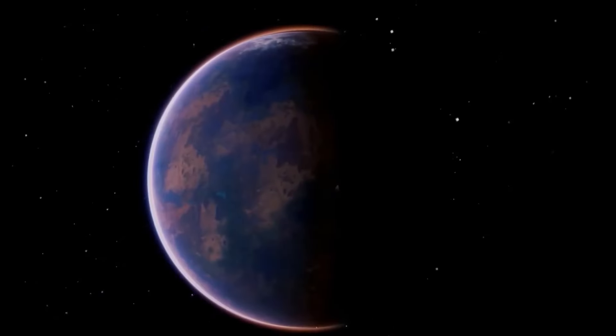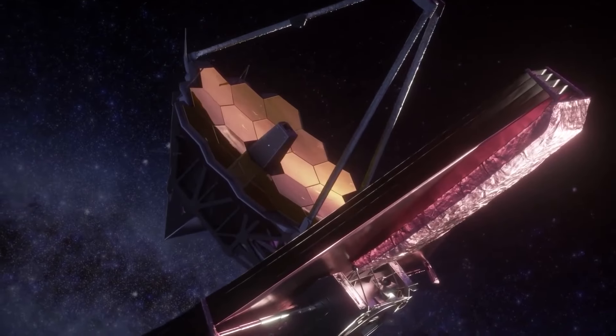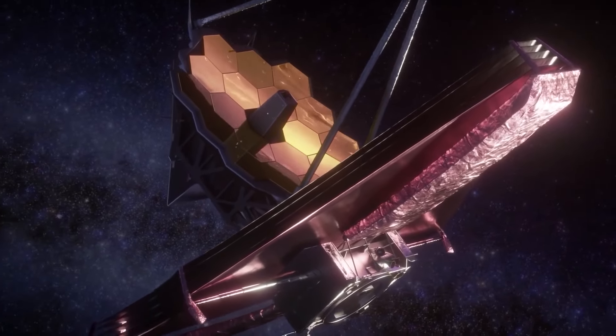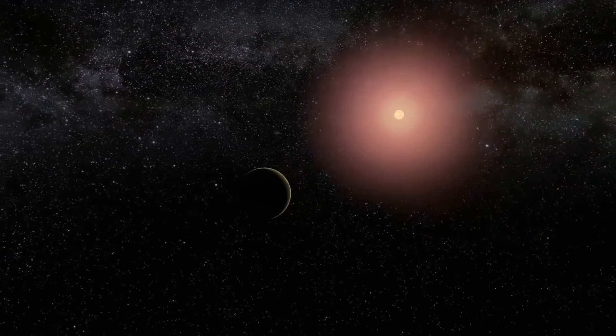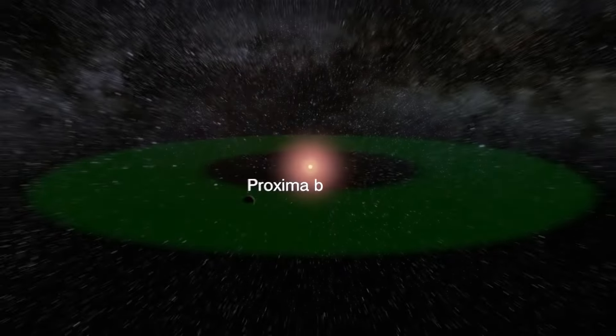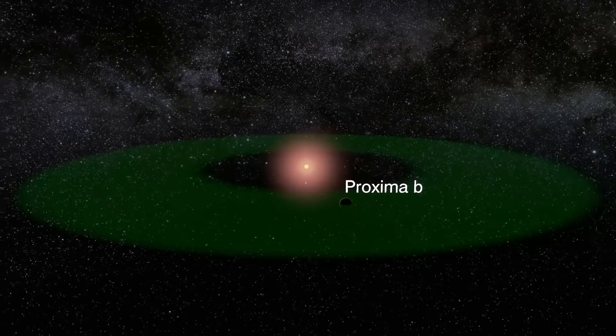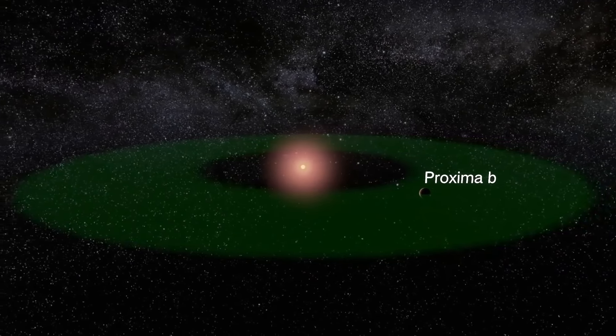Studying Proxima b presents several challenges due to its relatively small size and the bright glare of its parent star. It is difficult to image the exoplanet directly and observations often rely on detecting its effects on the parent star's light or studying its atmosphere using spectroscopy.